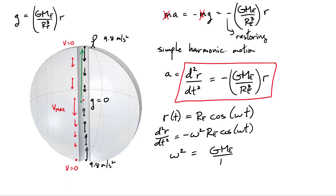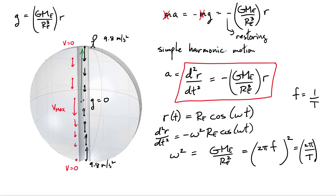Omega is the angular frequency, related to the linear frequency f as omega equals 2 pi f, so omega squared equals 4 pi squared f squared. Since frequency f equals 1 over the period T, we can substitute to get the period. The reason we do this is to find the period of oscillation - how long it takes to do one full round trip through the tunnel and back.